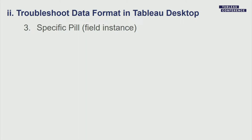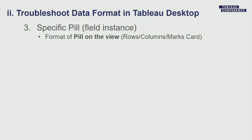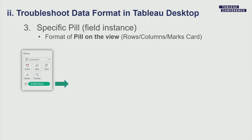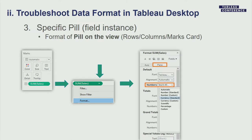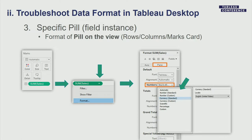If the issue is affecting only a specific instance of a field — also known as a pill — let's focus on that specific pill from the rows, columns, or marks card. In this example, we've got the measure Sales placed on the text shelf. It's not displaying the way we'd like, but only for this specific pill, not all instances of the field Sales. To check its format, we click the drop-down menu arrow from the text shelf, click Format, and depending on whether the issue is on the axis or the pane, we click one of those two. From the pane, we can check the number format and see the currency is currently defined by locale English United States, so we should be seeing dollars.